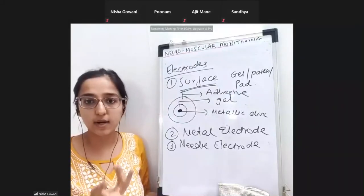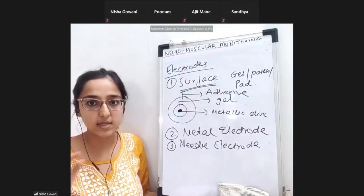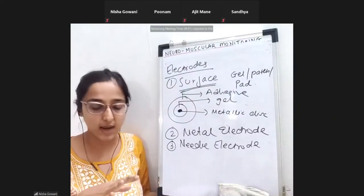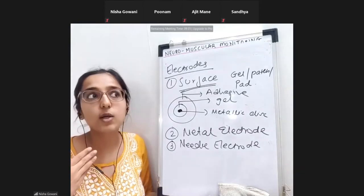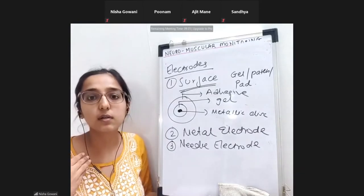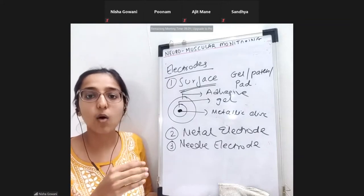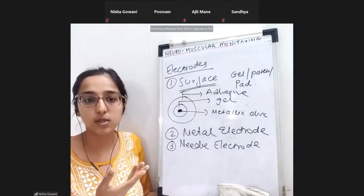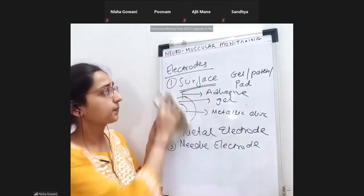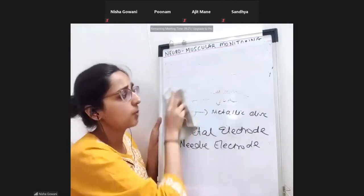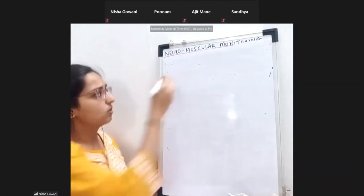Polarity you understood — I have already explained to you the plus and the minus, anode and the cathode. Now how we will evaluate the response. I'm giving a current — how will I see the response? So the oldest method is what of the response. I'll just list it down over here.